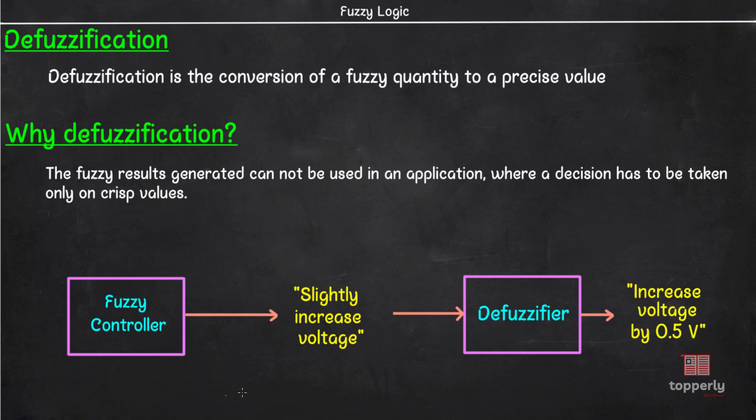For example, we cannot instruct the controller to increase the voltage going into a circuit slightly, even if this instruction comes from a fuzzy controller. We need to specify the amount of voltage change required. Controllers cannot take fuzzy inputs.